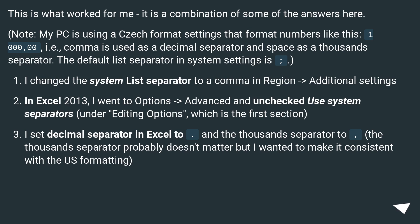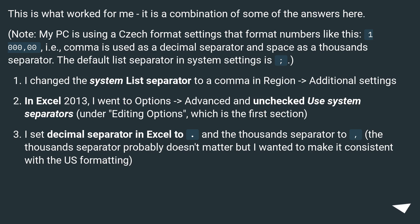Here is what worked: a combination of several answers. Note that this PC uses a Czech format — numbers formatted like 1 000 000, where comma is the decimal separator and space is the thousands separator. The default list separator in system settings was changed to comma via Control Panel > Region > Additional Settings.